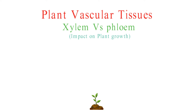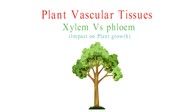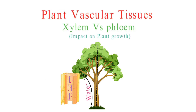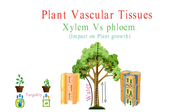So, how do these differences impact plant growth? Xylem's role in water transport is crucial for maintaining turgidity and supporting the plant's structure, while phloem's transport of sugars and nutrients is essential for growth, reproduction, and energy production.